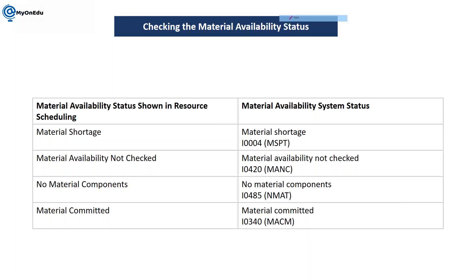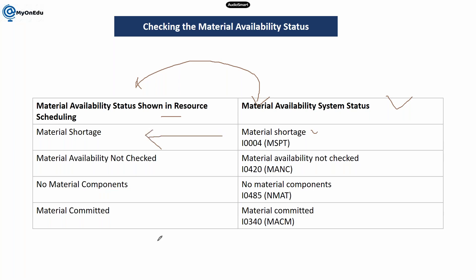As per the status in the PM order in IW32 — in the change PM order transaction — these are the material availability status codes and how they appear in resource scheduling. Material shortage shows as MSPT. Material availability not checked shows as MANC. No material component shows as MAT. Material committed shows as MACM. The internal system status numbers are I004, I0420, I0485, and I0340.